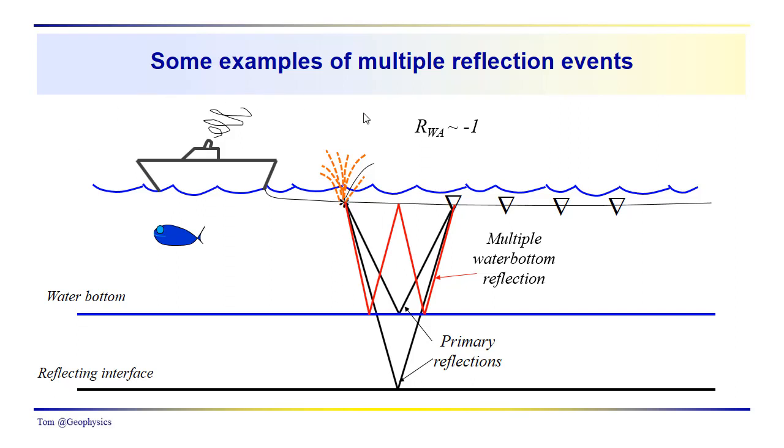Now let's take a look at some examples of water bottom multiples, of multiple reflection events, not just in the marine environment. We've been using the marine environment as an example because of the high reflectivity of the air-water interface or the water-air interface in this particular case.